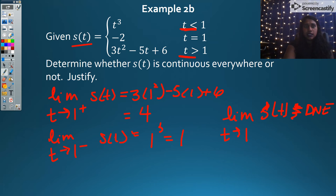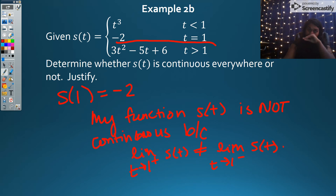Our final test is to test that function value. However, if my limit does not exist, do I know for sure that I can't have continuity? 100%, because if my limit doesn't exist, that's the left-hand side. But just to make sure we're going to test it. s(1) equals -2. So my function s(t) is not continuous because the limit as t approaches one from the right does not equal the limit from the left. I'm good to go right there.